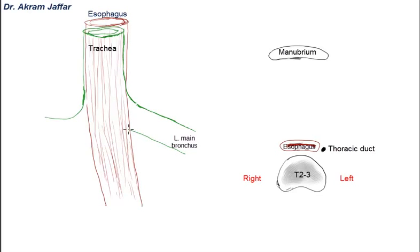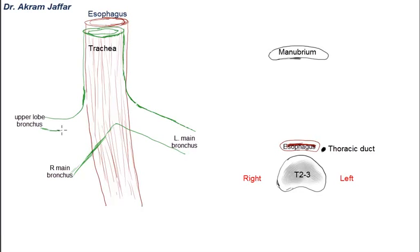This is the left main bronchus. The bifurcation is at the level of the manubriosternal joint. Because the trachea is inclined a little bit to the right, the right main bronchus is more in line with the trachea and is a little bit wider than the left main bronchus. Each main bronchus divides into lobar bronchi. On the right side, the upper lobe bronchus arises much farther from the hilum of the lung. These are the two lobar bronchi on the left side.